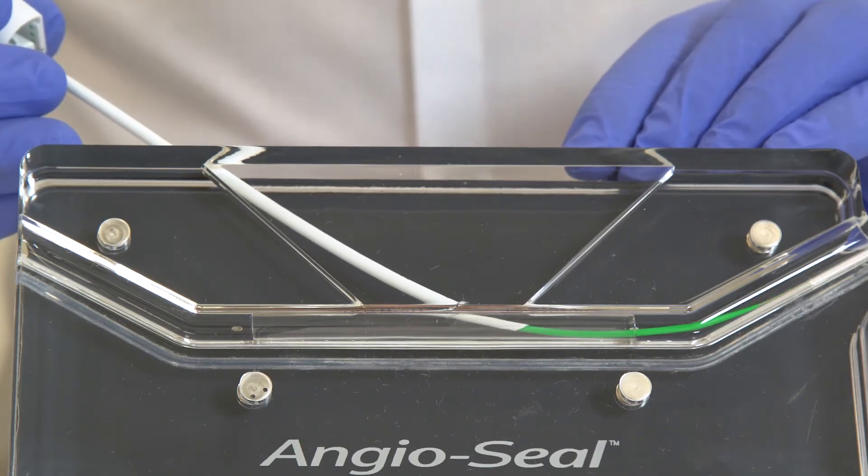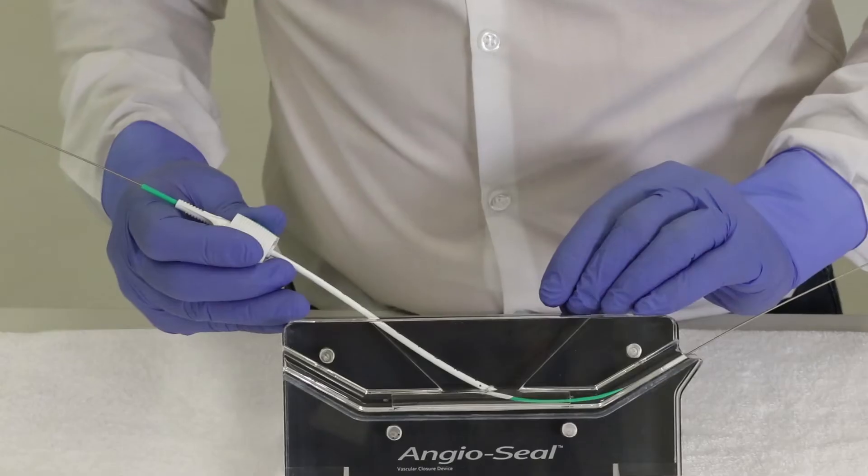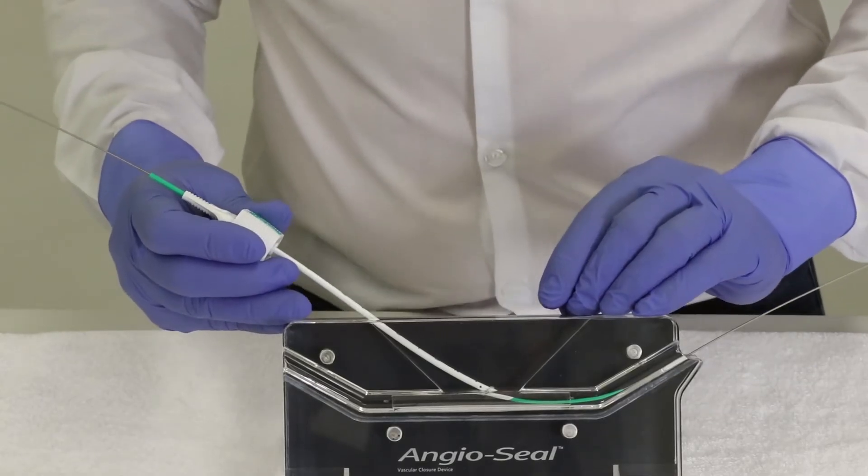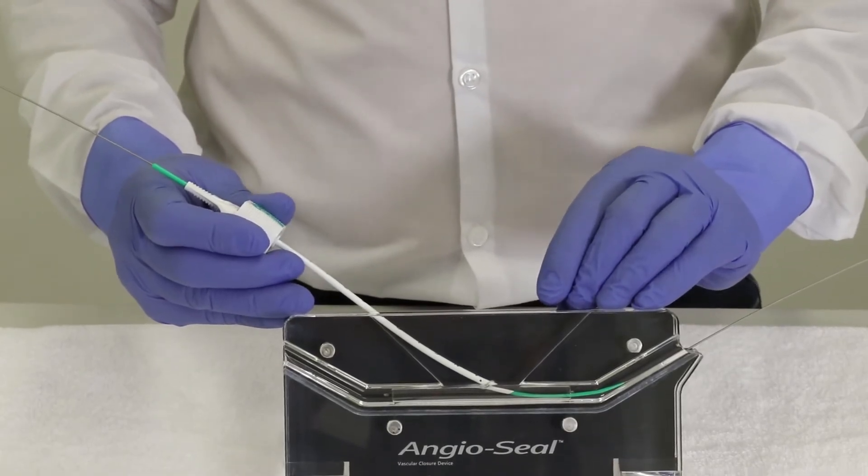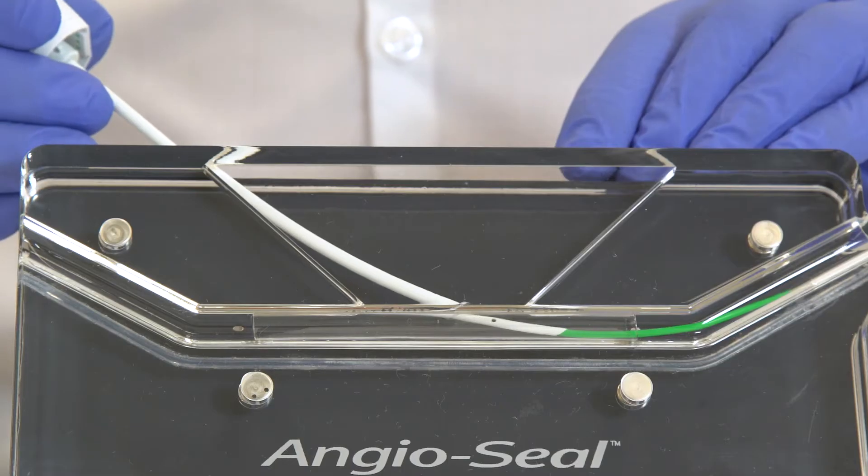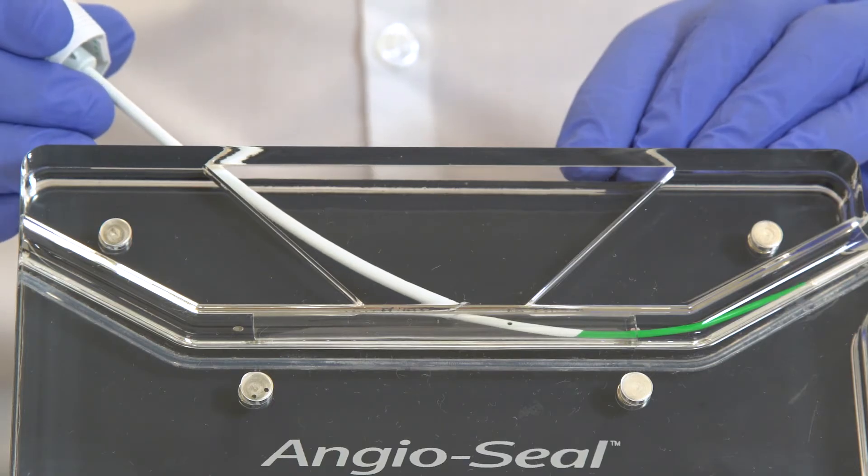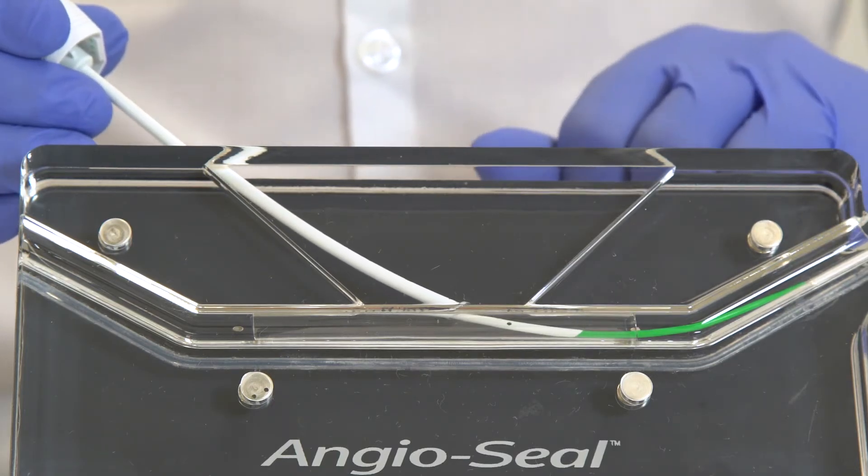And now the holes have come outside of the artery. The flow has stopped, so now advance the sheath again no more than one and a half centimeters until you have pulsatile flow again. Now we are back in the artery.